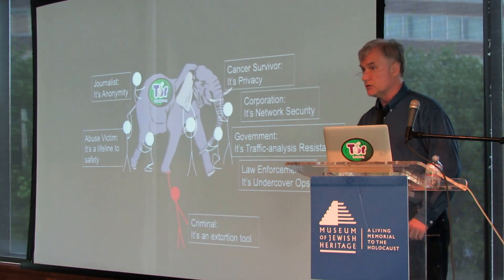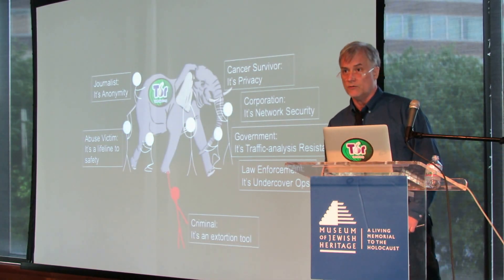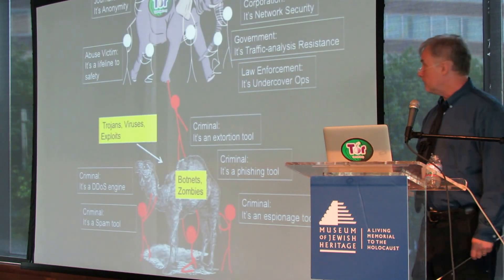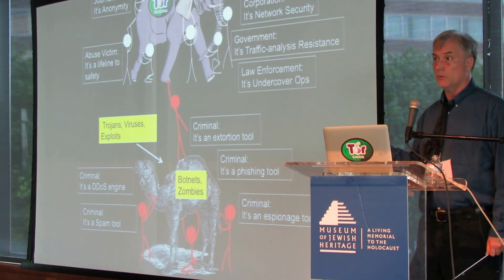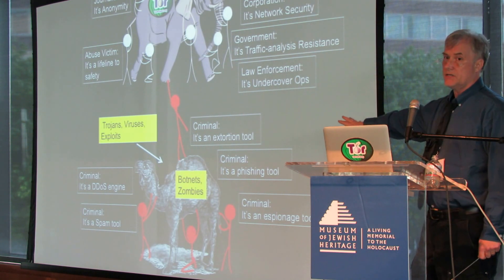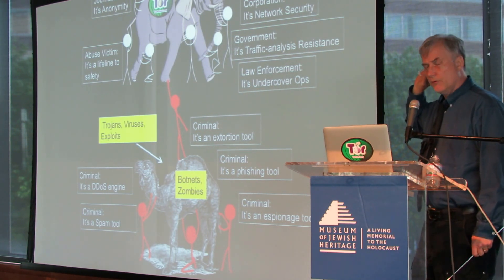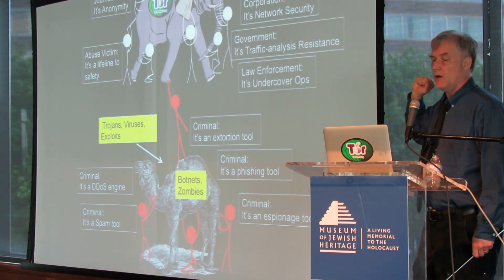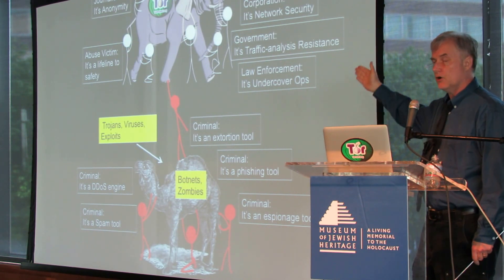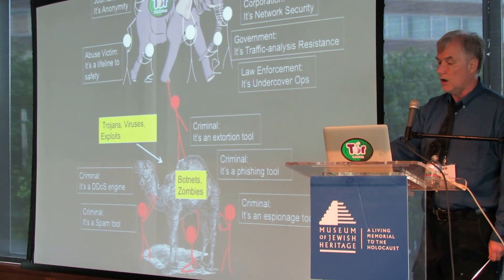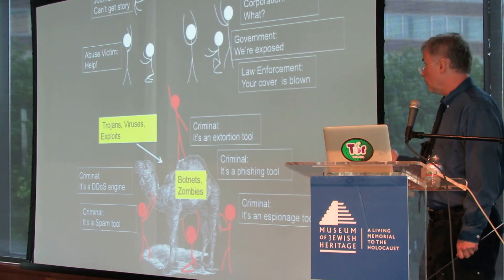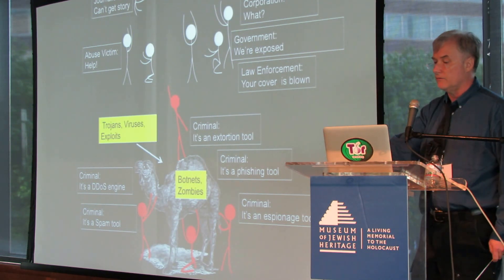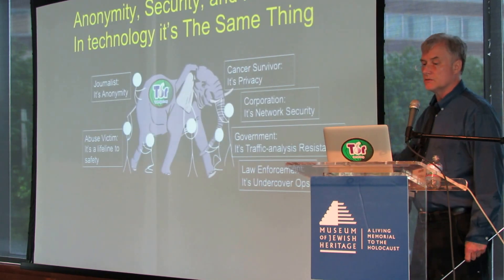There are bad guys that use this too, just like they use cell phones, hammers, and automobiles. But the difference is they have lots of other opportunities available to them — in fact, things that are harder to detect than Tor, because the Tor relay IP addresses are all publicly listed. Whereas if they set up stepping stones or a botnet, there's no indication of where they're coming from. So if you take Tor away, they're going to do just fine. It's the other folks that are not going to have anything.